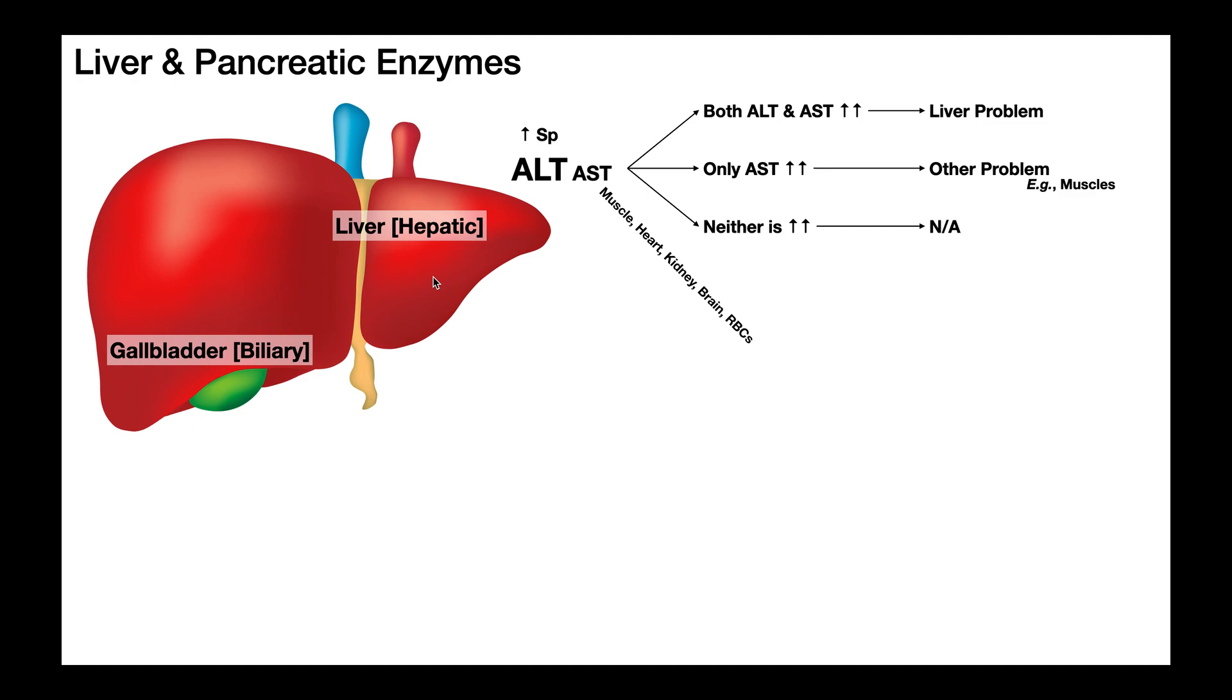So if those enzymes leak into the blood, they'll be detected in these blood tests. And so if they're elevated, that indicates that a particular tissue is damaged. Normally they're only present at low levels in the blood, but if they become elevated, it indicates that some tissue has become damaged. So let's talk about, first, the two major liver enzymes.